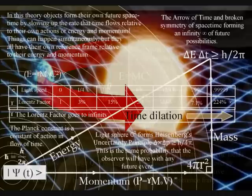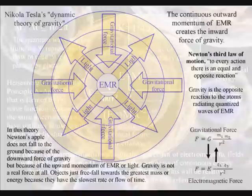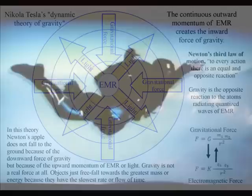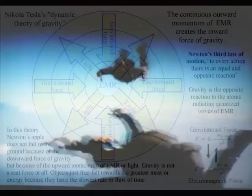In this theory, this is a universal process. Everything from the smallest creature to the largest planet forms its own future space-time by slowing up the rate that time flows. Objects just freefall towards the greatest energy because it has the greatest time dilation, or the slowest rate that time flows.